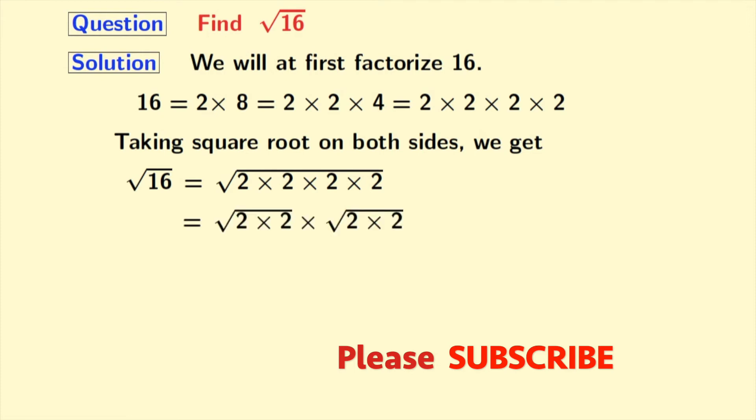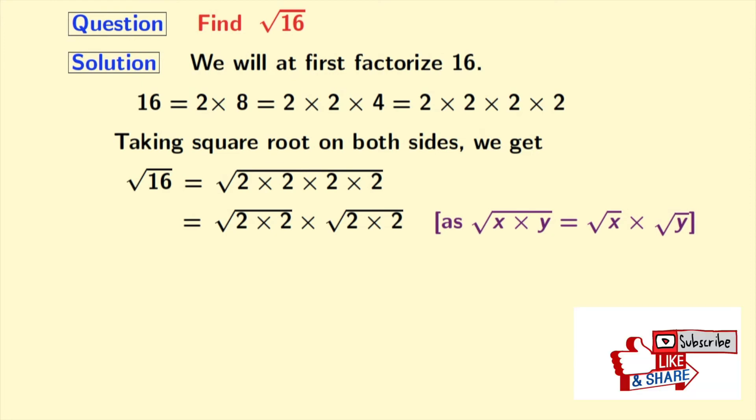After grouping, we get square root of 2 times 2 times square root of 2 times 2. As we know that square root of x times y is equal to square root of x times square root of y. Here, both x and y are 2 times 2.